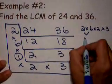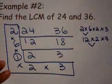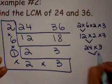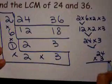2 times 6 is 12 times 2 times 3. 12 times 2 is 24 times 3 is going to give you